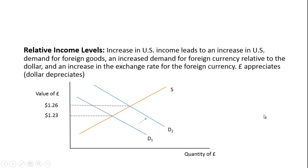Relative income levels: an increase in US income leads to an increase in US demand for foreign goods. As US residents become richer, they buy more things, including goods and services from overseas, increasing demand for imports. They'll need to increase their demand for foreign currency — if they're buying sweaters from Great Britain, they'll have to convert dollars into pound sterling. That increases demand for pounds, which causes the pound to appreciate and the dollar to depreciate.